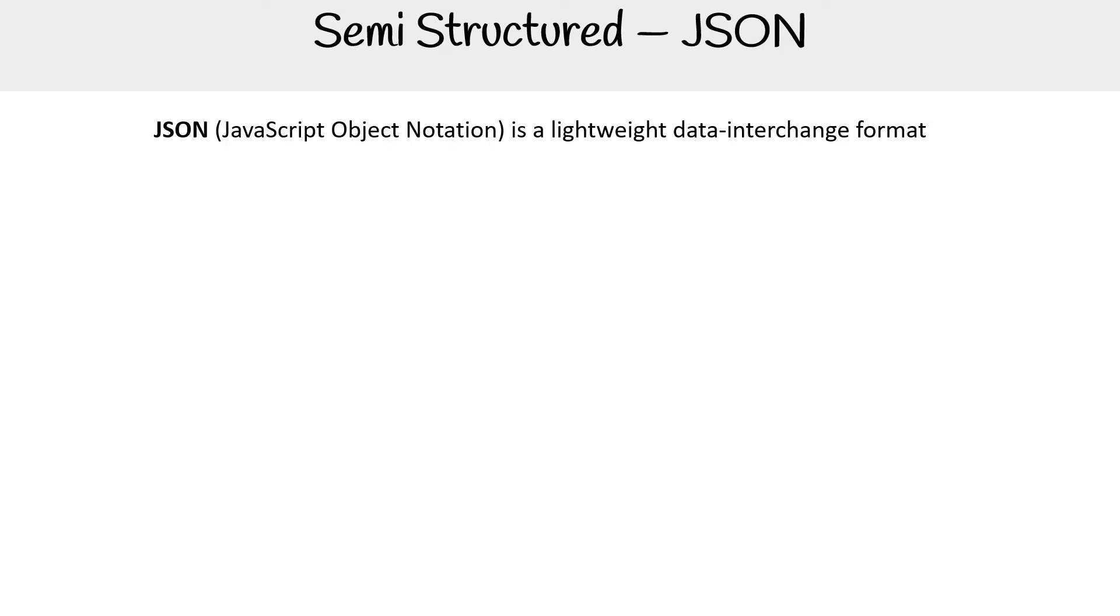Alright, let's take a look at JSON. JSON stands for JavaScript object notation, and it is a lightweight data interchange format that is easy for humans to read and write.